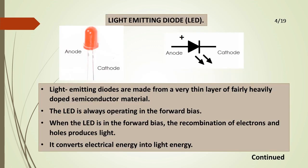Light Emitting Diode. Light Emitting Diodes are made from a very thin layer of fairly heavily doped semiconductor material. The LED always operates in forward bias. When the LED is in forward bias, the recombination of electrons and holes produces light. It converts electrical energy into light energy.